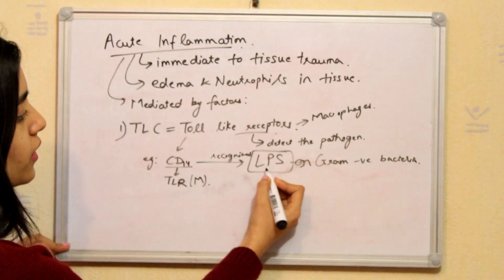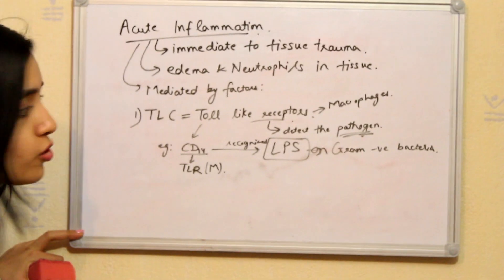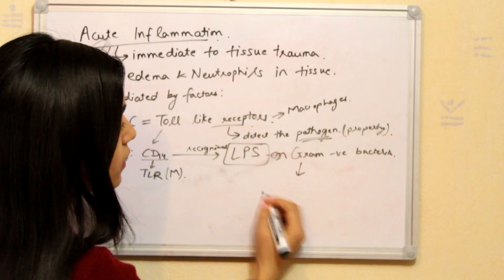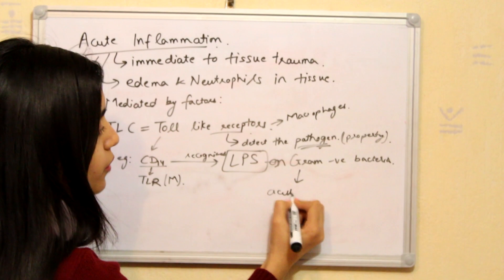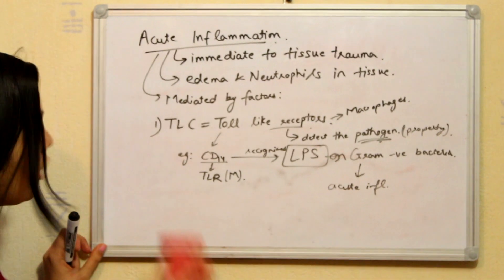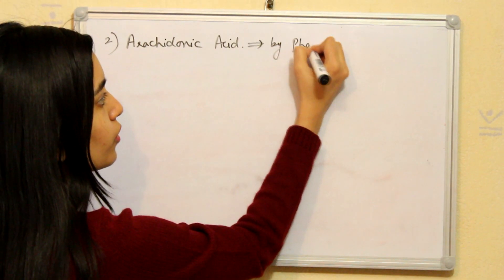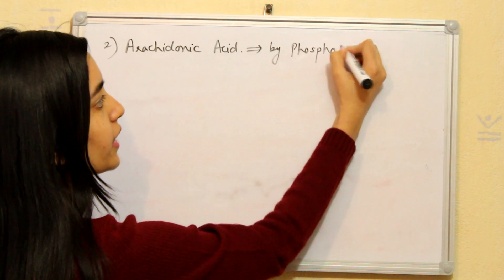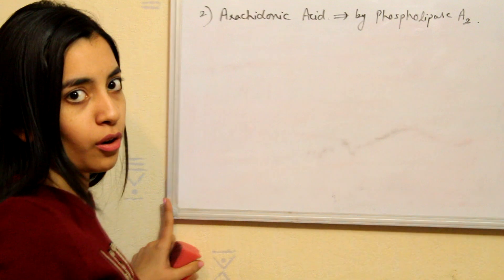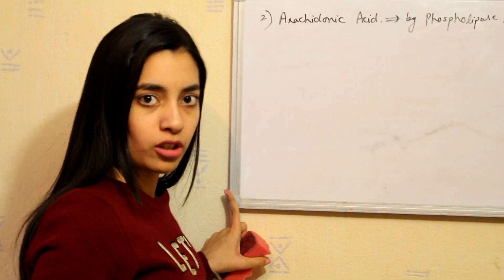When it recognizes the lipopolysaccharide which is the property of a pathogen, it then activates acute inflammation. Okay so our next factor will be arachidonic acid which is released by Phospholipase A2. Now this factor is very important and I need you to remember all of it because it will be very helpful for you in the pharmacology section.